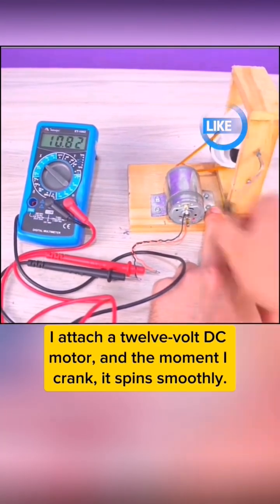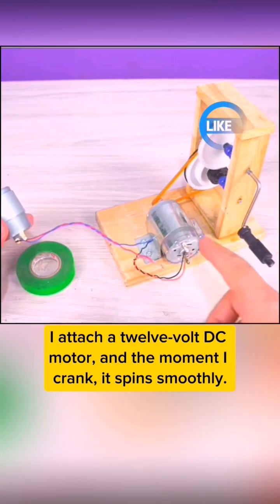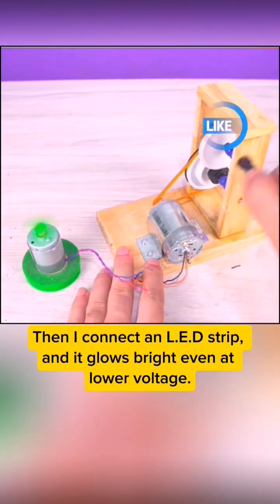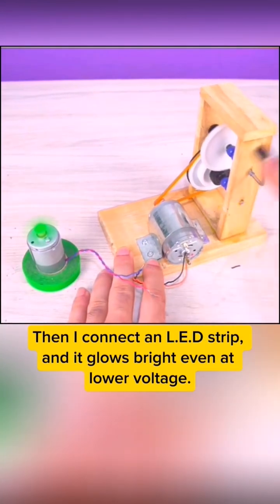I attach a 12 volt DC motor, and the moment I crank, it spins smoothly. Then I connect an LED strip, and it glows bright even at lower voltage.